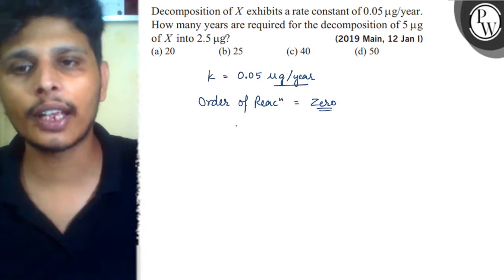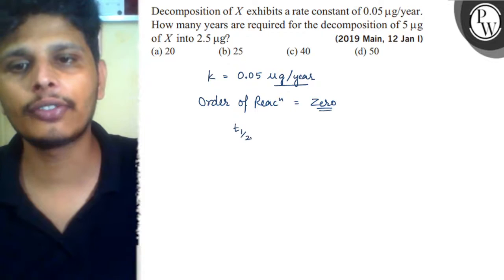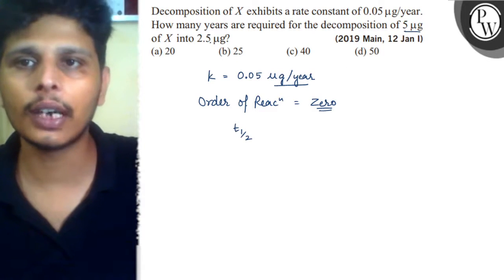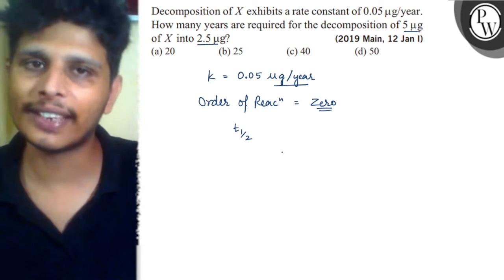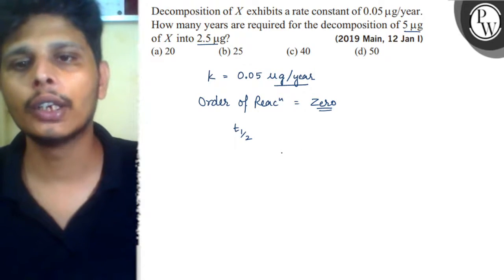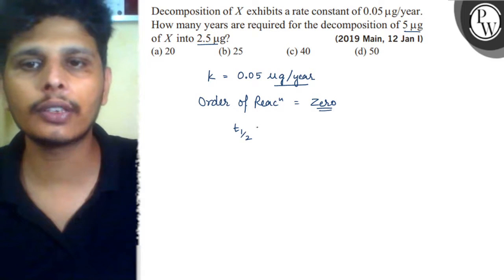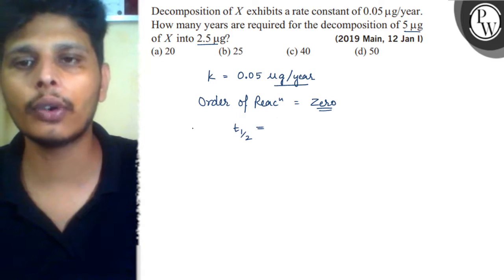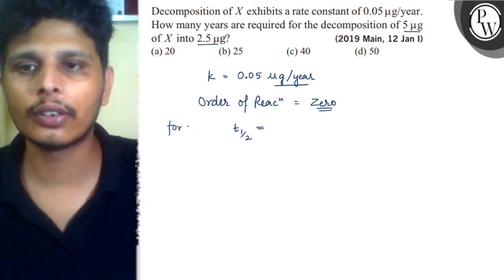And for zero order reaction, if we need to find t half, because 5 micrograms to 2.5 micrograms, so reaction portion half, we can write the t half formula for zero order reaction.